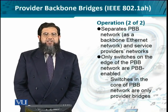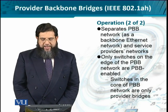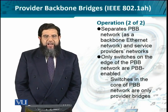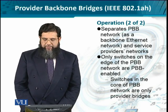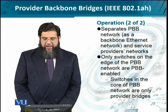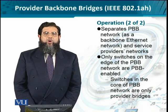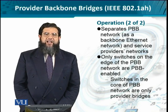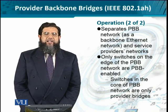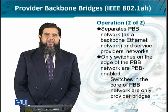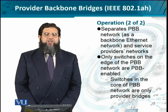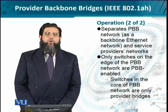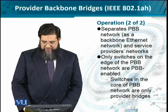The provider backbone bridges use the I-tag, which separates traffic as it enters from one provider network to another. The source and destination MAC addresses are what modify at each hop. Importantly, when traffic enters the provider backbone network there is an entry and exit point. The intermediate switches within the backbone are not necessarily required to be provider backbone enabled — they just need to behave like provider bridges. We are only interested in the ingress and egress behavior of the provider backbone bridge.